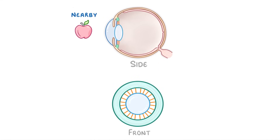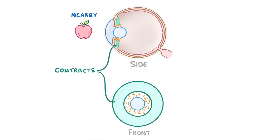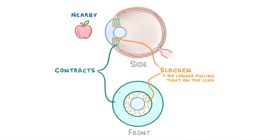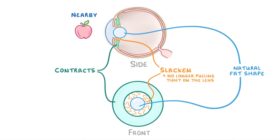Now, whenever you look at a nearby object, the ciliary muscle contracts, and it actually contracts inwards towards the lens. Because it's now closer to the lens, the suspensory ligaments slacken, which means they become loose. And because they're no longer pulling tight on the lens, the lens is free to return to its natural, fatter shape, so it can now refract light more strongly.